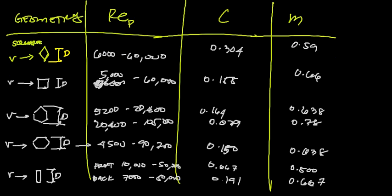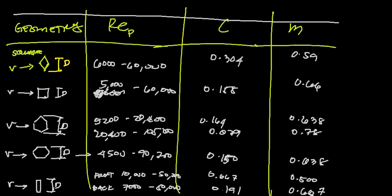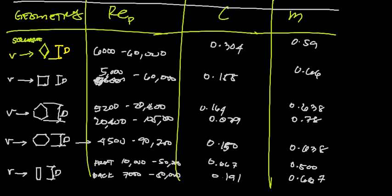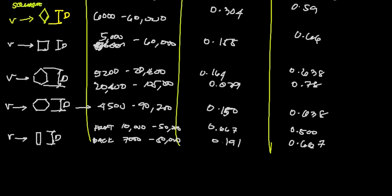That is for the constant of Hilpert equation for non-circular cylinders. This is for the cross flow of a gas. It is from the Incropera, Dewitt, Belgarm, and Levine Introduction to Heat Transfer year 2007. I got this data from that textbook, Introduction to Heat Transfer.